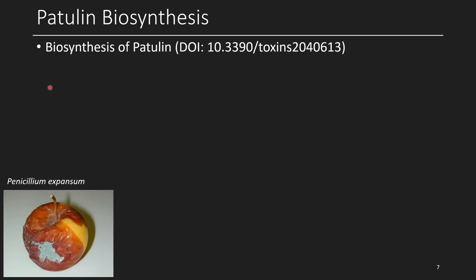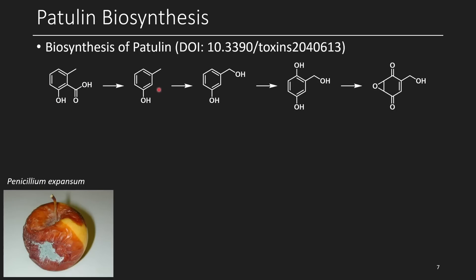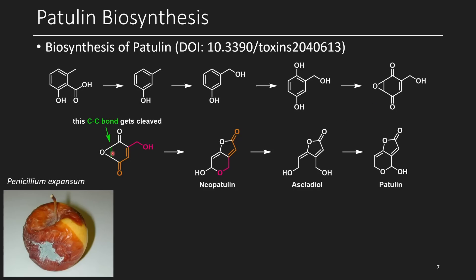Let's talk about the biosynthesis of patulin. Starting with 6-methylsalicylic acid, it's decarboxylated to give metacresol. We then undergo hydroxylation at the benzylic position, followed by ortho-hydroxylation to give a 1,4-hydroquinone. This is oxidized to a benzoquinone-type species, and epoxidation occurs at the alkene giving an epoxide. This epoxide is cleaved, rearranging to give neopatulin. The acetal — a masked aldehyde — is then reduced to a diol called ascladiol, which is then oxidized at the other hydroxy group to give patulin.